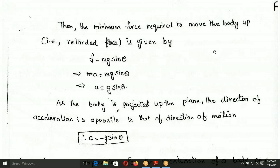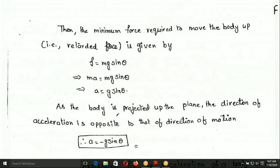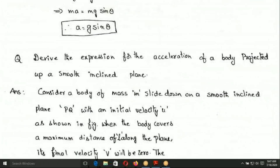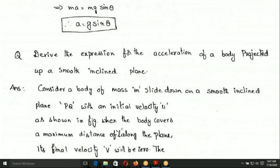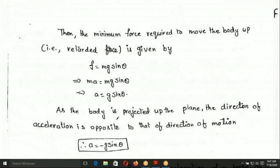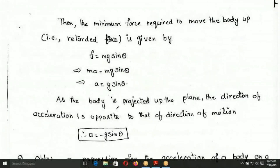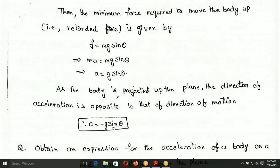As the body is projected up, using sign convention, the acceleration is taken as negative. So A is equal to minus g sin theta for sliding up, and A is equal to g sin theta for sliding down. These are the two expressions for acceleration on a smooth inclined plane.